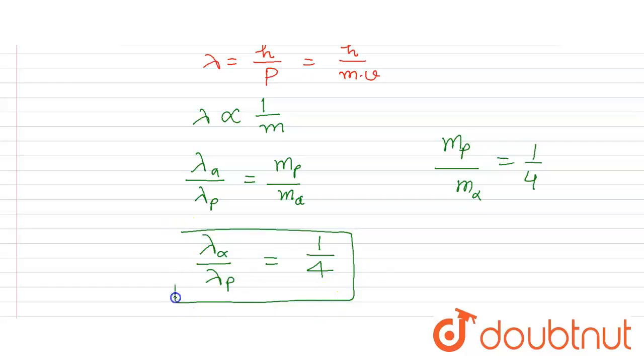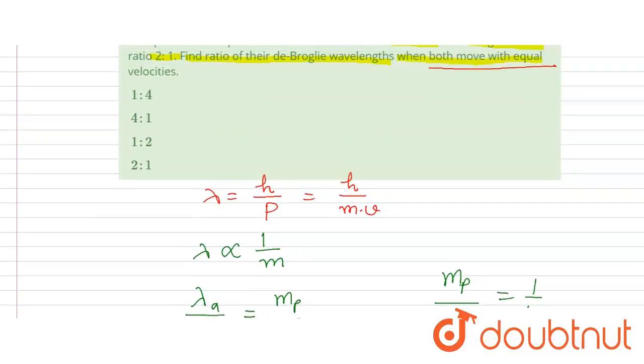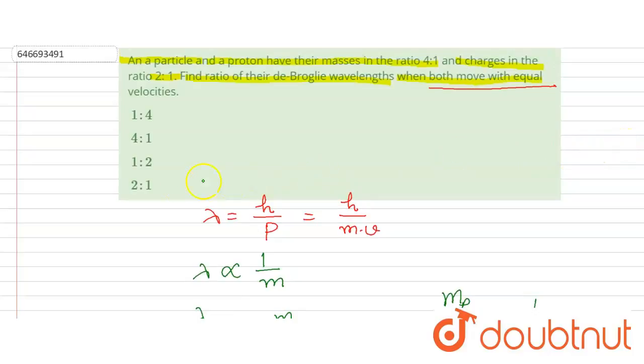So this is the relation or the ratio of the wavelength of alpha and the proton. So the correct option will be first one. Thank you.